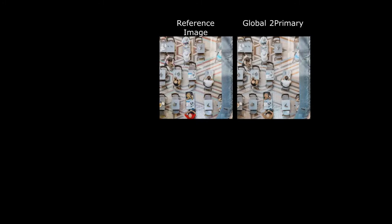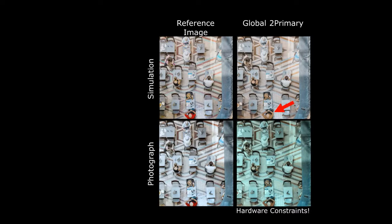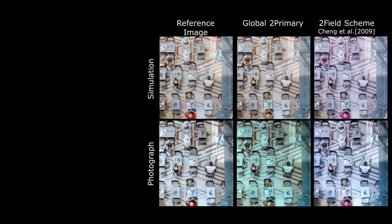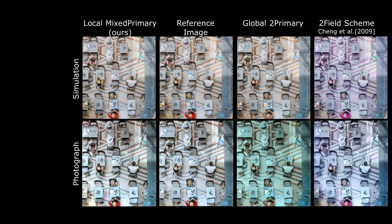Here are some results. The global two-primary method closely resembles the reference image, but local color is missing. When we photograph the prototypes, due to practical hardware constraints, the global two-primary method can have severe color shift. Similar to our hardware, the two-field scheme uses low-resolution red-blue and green-blue backlights. Without properly optimizing the modulation, their results can have blue or purple tints. Finally, our local backlights are properly optimized and mixed to both frames, so it can better reproduce the reference.